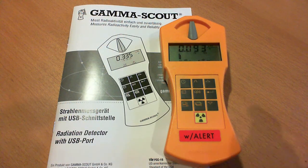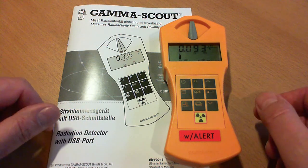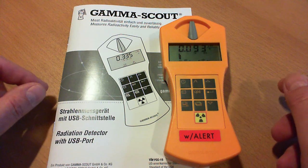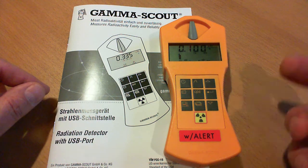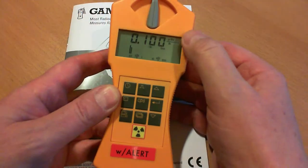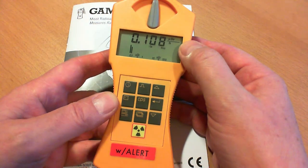The GammaScout GS2 is a device to measure alpha, beta and gamma radiation. The normal operating mode is the radiation measurement in units of microsieverts per hour, and the measured values are constantly saved.